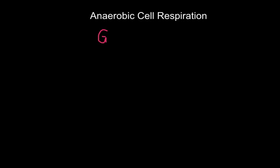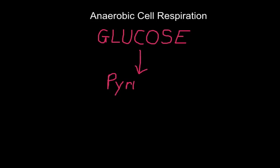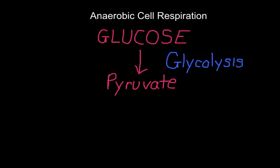In anaerobic cell respiration, glucose is broken down to two pyruvates. This is known as glycolysis and produces two ATP. This is a relatively small yield of ATP compared to aerobic respiration. This does not require oxygen, and that's why it's called anaerobic.